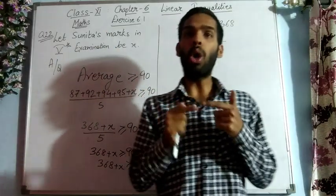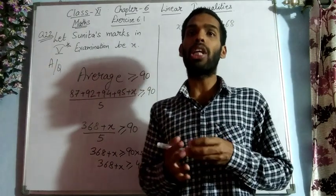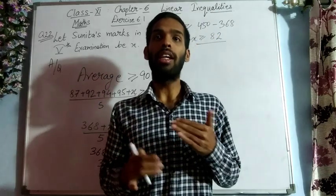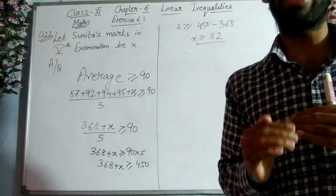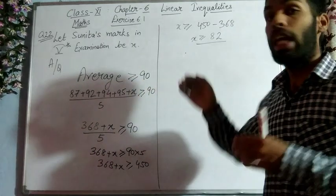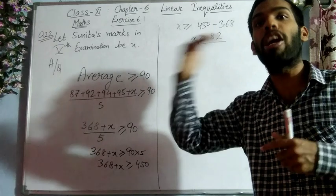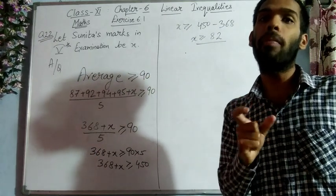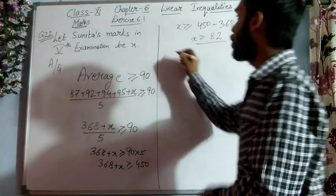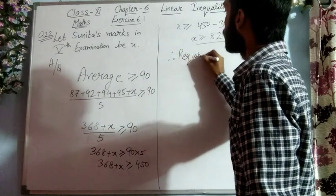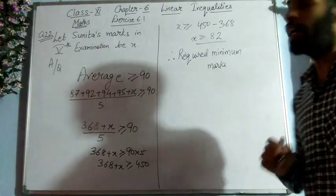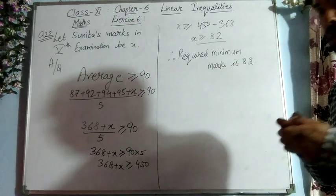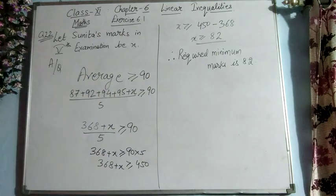So x ≥ 82 means the minimum marks she should obtain to get an average of 90 or more is 82. x ≥ 82 means she can score 82 or more — 82, 83, 84, and so on. The minimum marks from all those values is 82. So if she has to obtain Grade A, she must score at least 82 in the fifth examination. This is the solution to Question 22 of Exercise 6.1.